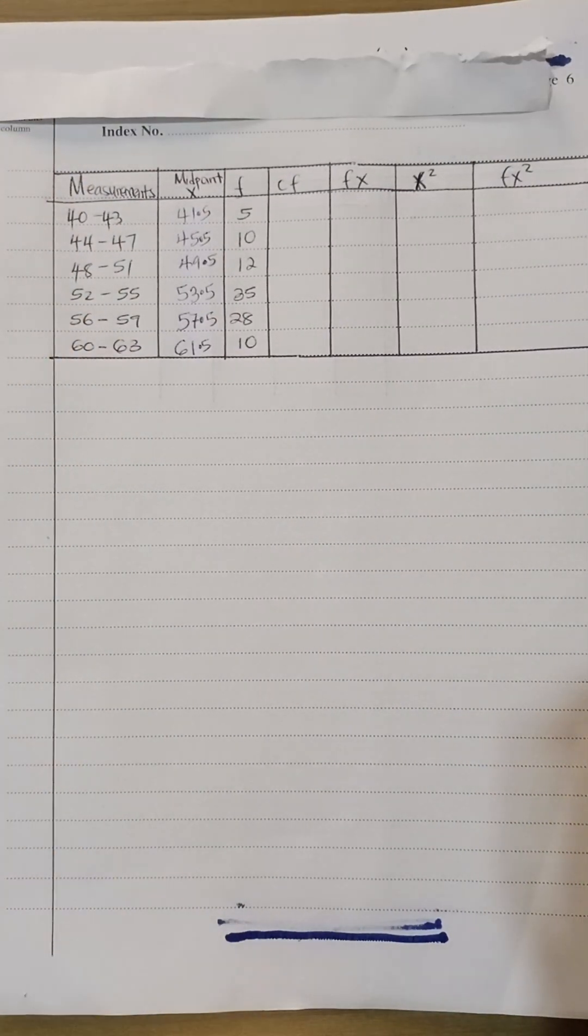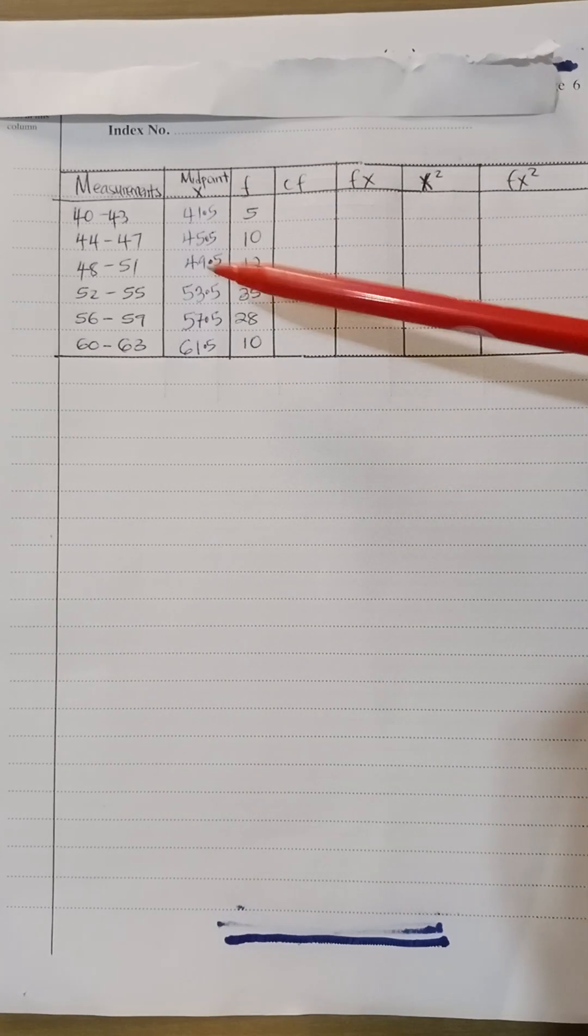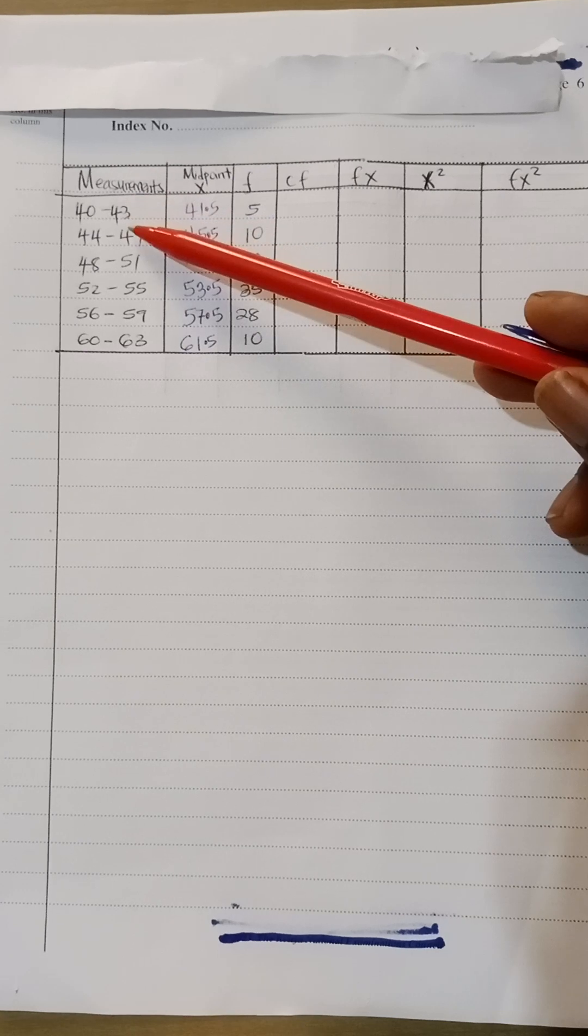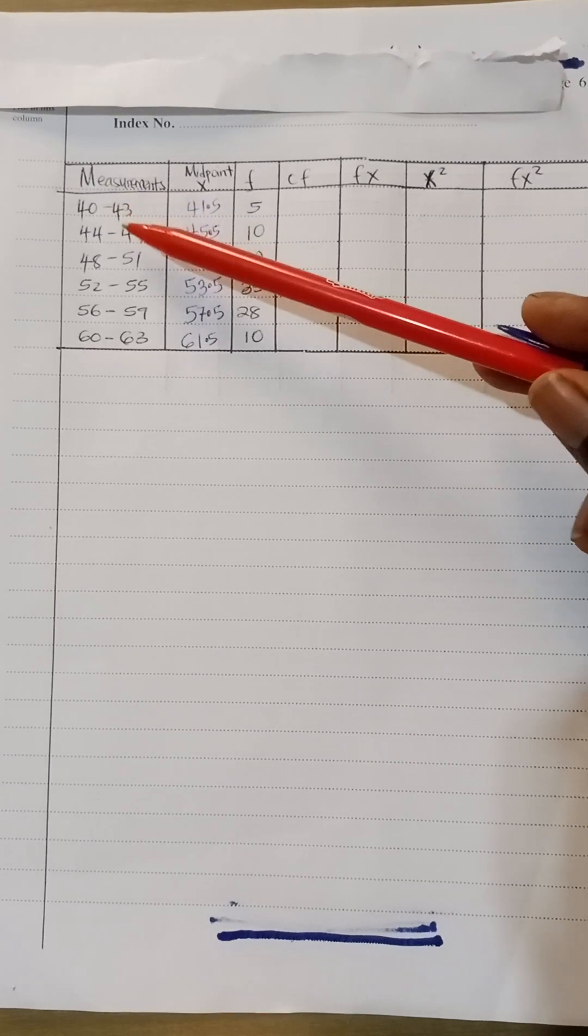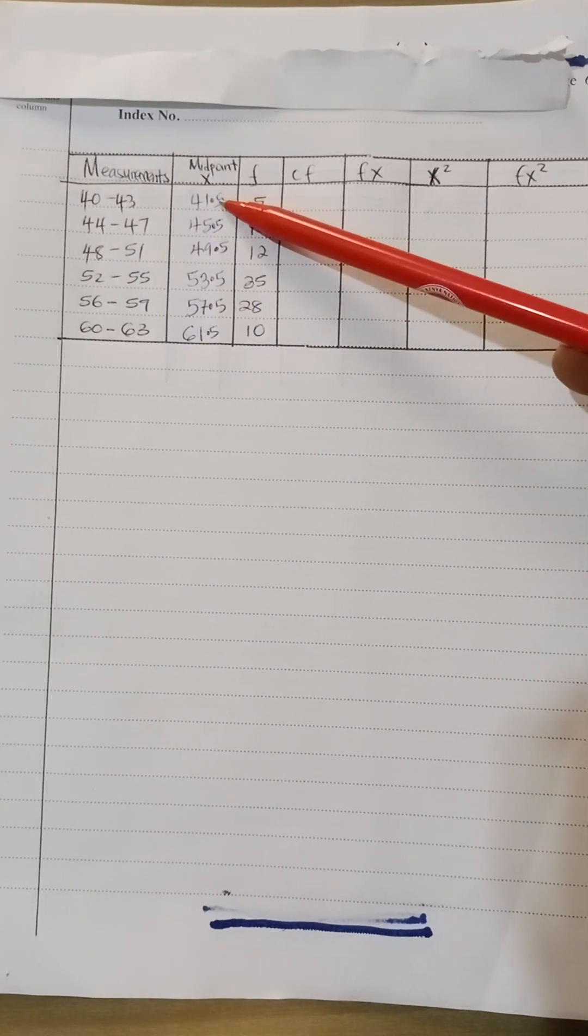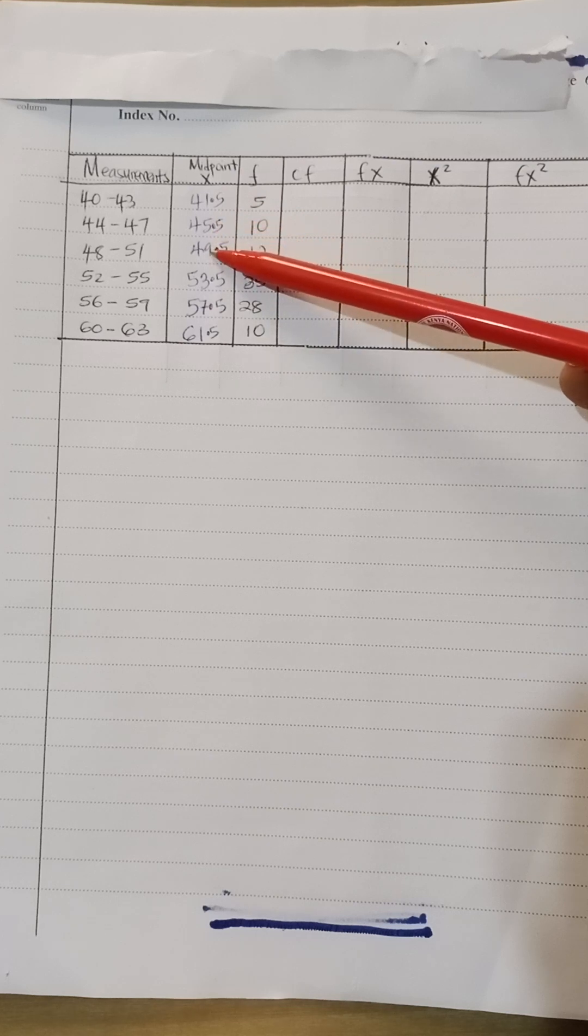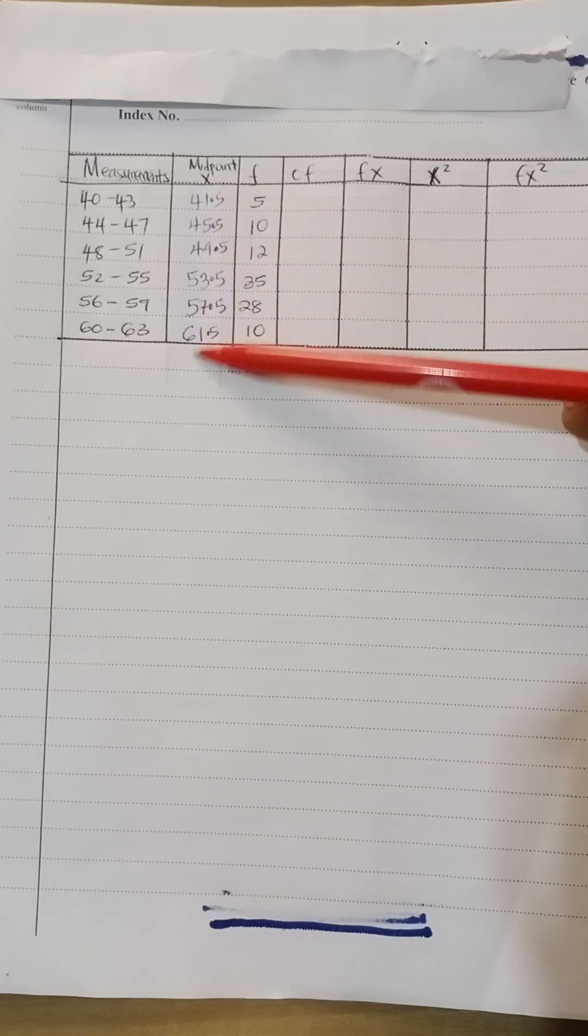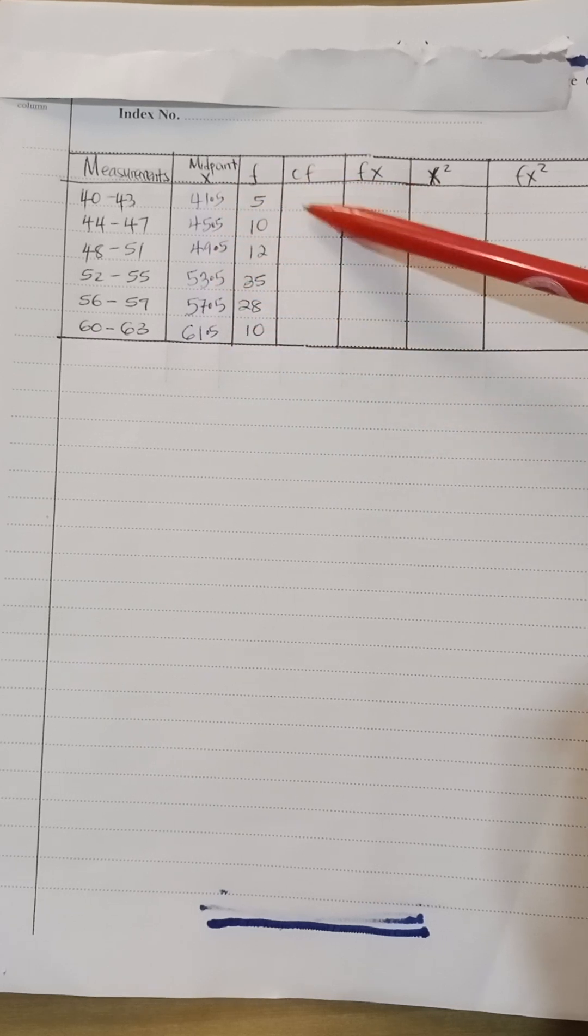The first thing you do is to prepare the frequency distribution table where you have the midpoint, the frequency, the cumulative frequency, the fx, the x squared, and the fx squared. I've already done the midpoint. Basically, midpoint is 40 plus 43 divided by 2, again here is 44 plus 47 divided by 2. You get 41.5, 45.5, 49.5, all the way.